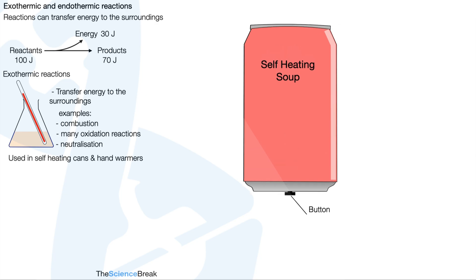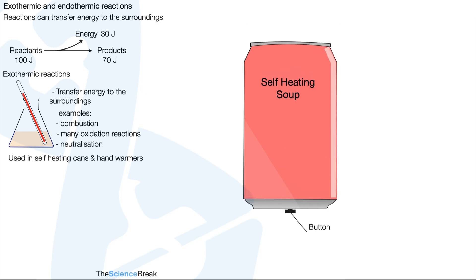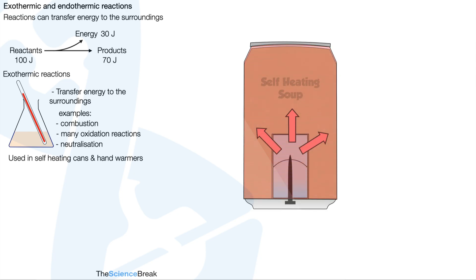These types of reactions are used in self-heating cans and hand warmers. In terms of our self-heating can, there's a small diagram to show the idea. We've got some self-heating soup and there's a little button at the bottom of the can. When we press the button, we pierce a little membrane which causes two chemicals to mix, causing an exothermic reaction which heats our soup.